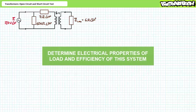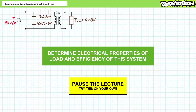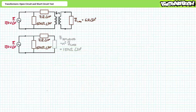As a parting exercise to the viewer, see if you can determine the electrical properties of the load and the efficiency of this system, given the electrical load on the secondary is modeled as an impedance of 6 ohms at an angle of 20 degrees. By all means, pause the lecture and try this on your own. The reflected impedance seen by the primary winding is the turns ratio squared times the load impedance. Substituting in our given values demonstrates the reflected impedance equals 150 ohms at an angle of 20 degrees.